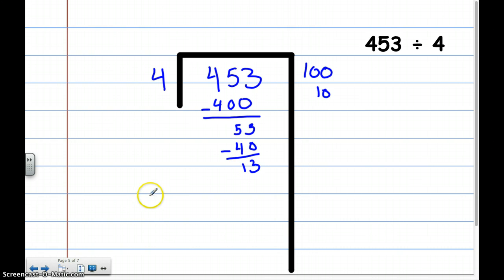Now, how many times can 4 go into 13? That's going to be 3 times. Because 4 times 3 is 12. And then I'm going to subtract. And I have a remainder of 1. I'm going to add up my numbers over here. And that gives me 113 with a remainder of 1.